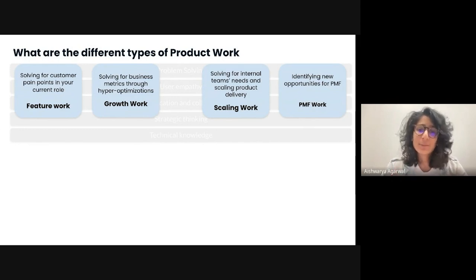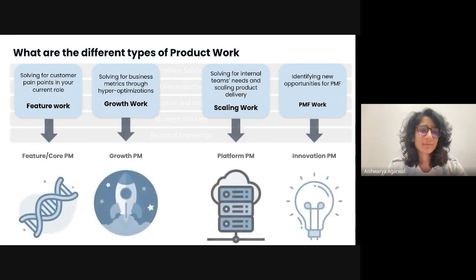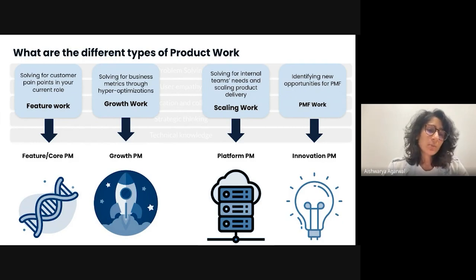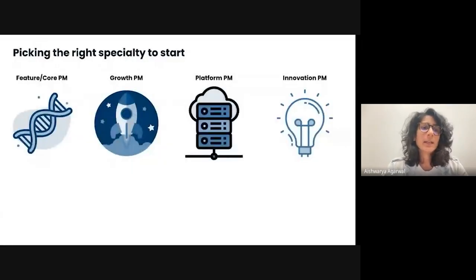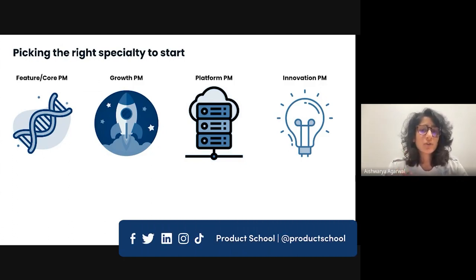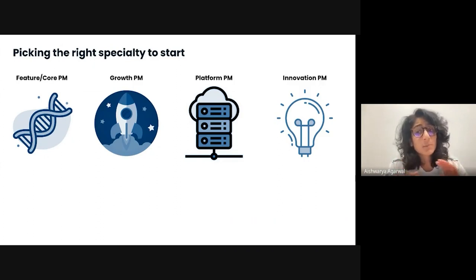You might have already connected the dots, but these four types of product work match to these four PM types: the feature or core PM, the growth PM, the platform PM (when I was in this role, we called it data PM), and the innovation PM, which can also be zero to one product management. Now, let's say you're an aspiring PM or already a PM considering a specialization switch. How should you think about each specialization and a skills fit? There are three things you should consider: what are the skills required, who will be your key collaborators, and whether your current role might be a good skills fit for the next PM job. We already discussed the focus of each type of PM — solving customer pain points through feature work, solving for business metrics through hyper-optimization as a growth PM, scaling product delivery as a platform PM, and finding a product market fit as an innovation PM.